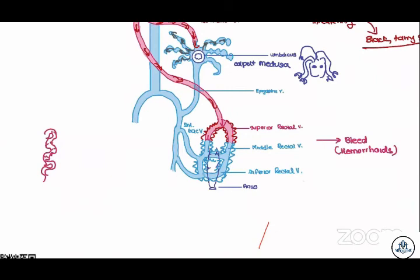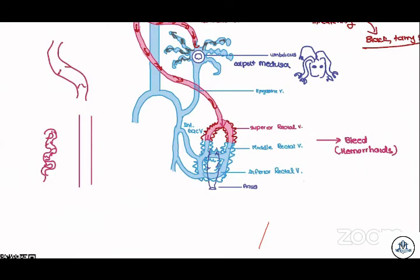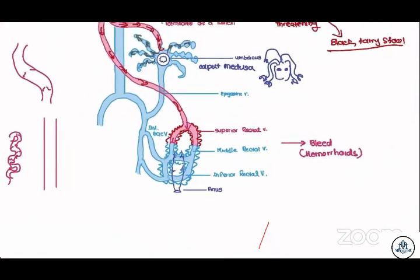Varicosities: the veins are supposed to run smoothly with valves, but in varicosities they become tortuous. Hemorrhoids can bleed — the pressure increases, causing dilation, and these dilated rectal vessels can bleed.